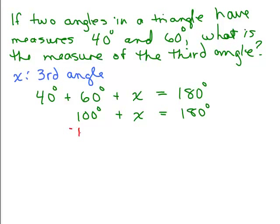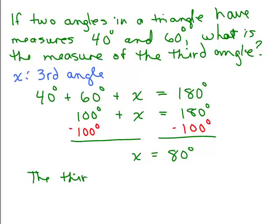And then if I subtract 100 degrees from both sides, that tells me x is 80 degrees. And that is the measure of the third angle. Now you don't want to leave your answer as x equals 80 degrees because look at the original problem. There was no such thing as solving equation or it doesn't say what's x, it says what's the measure of the third angle? So you'd write the third angle is 80 degrees.